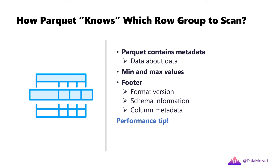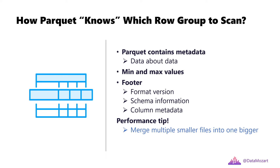I'll give you one performance tip. In order to optimize performance and eliminate unnecessary data structures such as row groups and columns, the engine first needs to get familiar with the data, so it first reads the metadata. It's not a slow operation, but it still requires a certain amount of time. Therefore, if you are querying data from multiple small Parquet files, query performance can degrade because the engine will have to read metadata from each file. So you should be better off merging multiple smaller files into one bigger file, but still not too big. There is no single golden number here, but for example, Microsoft Azure Synapse Analytics recommends that the individual Parquet file should be at least a few hundred megabytes in size.